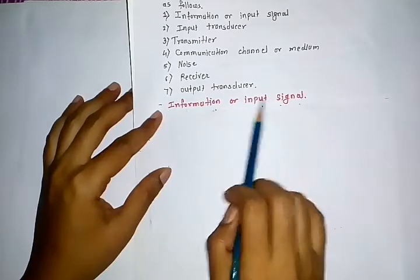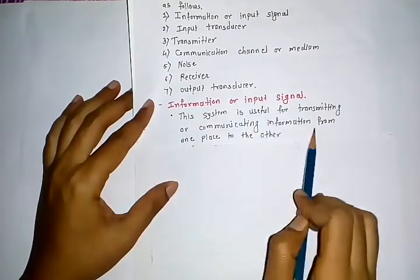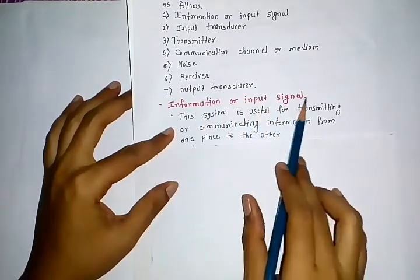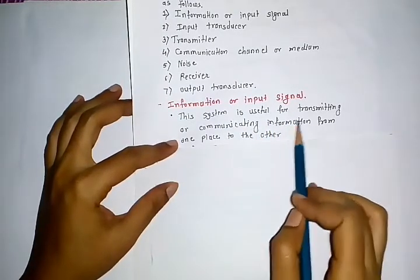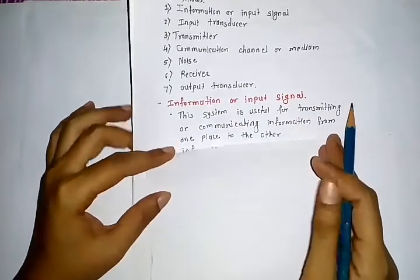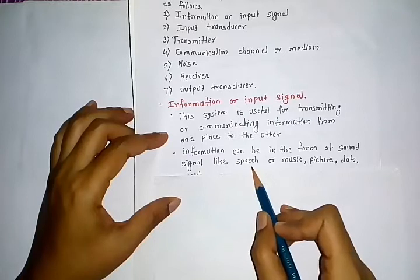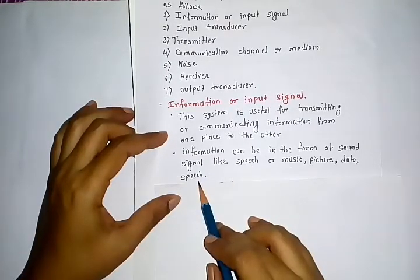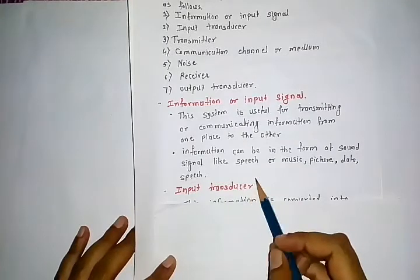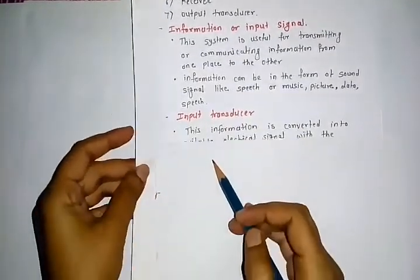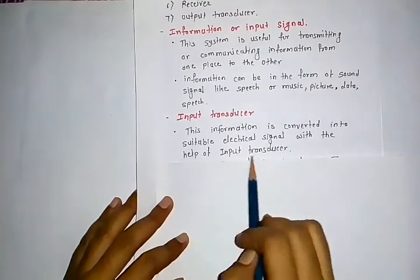First element: information or input signal. The system is useful for transmitting or communicating information from one place to another. For the input transducer: this information is converted into a suitable electrical signal with the help of the input transducer.